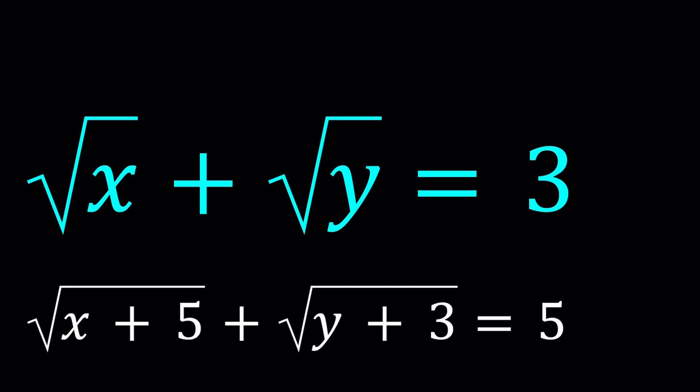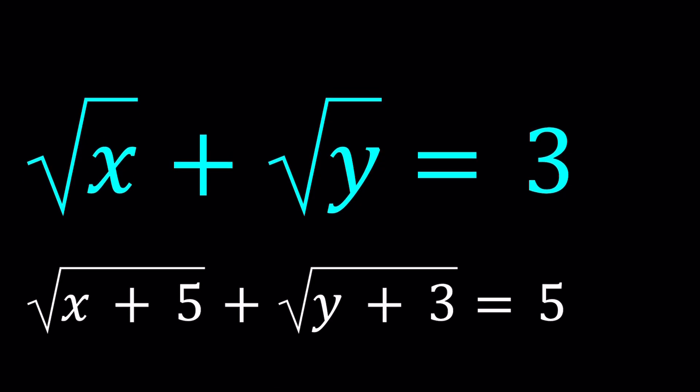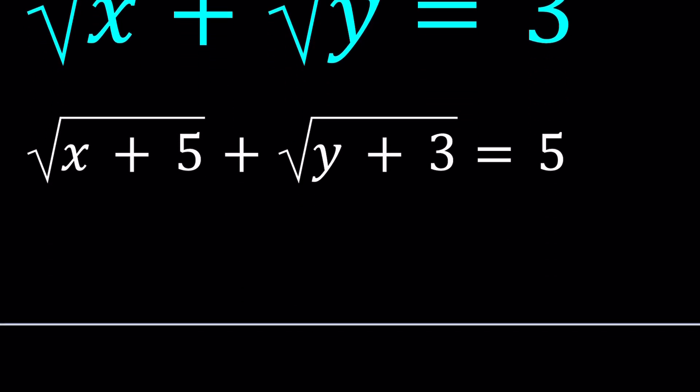Hello everyone. In this video we're going to be solving a radical system. We have the square root of x plus the square root of y is equal to 3, and then the square root of x plus 5 plus the square root of y plus 3 is equal to 5. We're going to be solving for x and y values. I'll be presenting two approaches, and let's start with the first method.